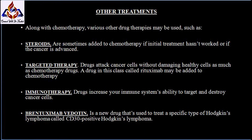Other treatments include various drug therapies used alongside chemotherapy, such as steroids, targeted therapy, immunotherapy, and brentuximab vedotin. Steroids are sometimes added to chemotherapy if initial treatment has not worked or if the cancer is advanced. In targeted therapy, drugs attack cancer cells without damaging healthy cells as much as chemotherapy; a drug called rituximab may be added if you have NLPHL. Immunotherapy drugs increase your immune system's ability to target and destroy cancer cells. Brentuximab vedotin is used to treat CD30-positive Hodgkin's lymphoma.